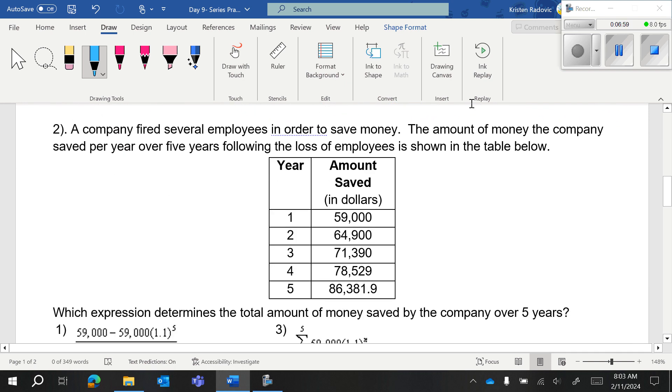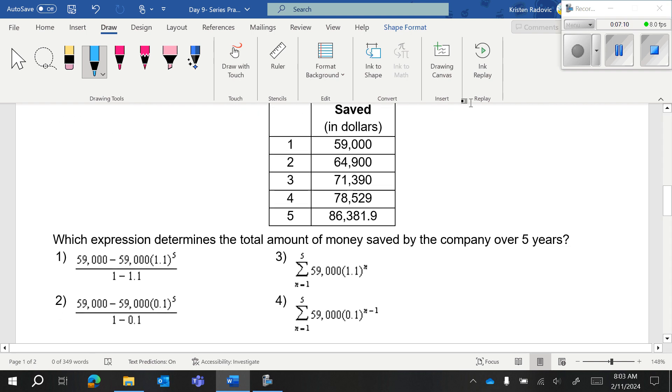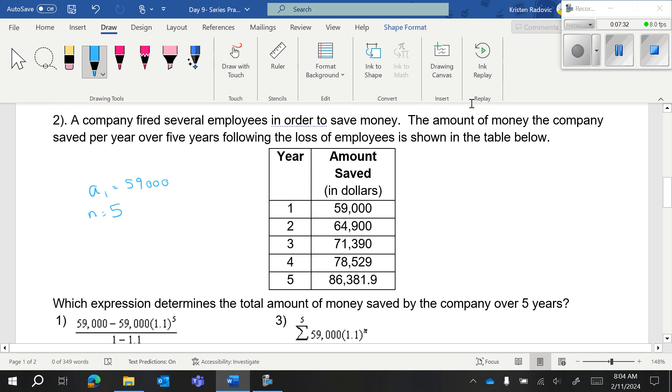You have a company fired several employees in order to save money. The amount of money the company saved per year over the five years following the loss is shown in the table below. They want an expression that determines the total amount of money saved. So we have A sub 1 $59,000 and N is 5.